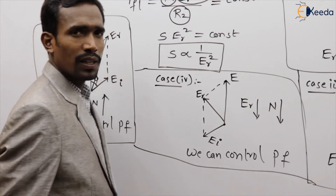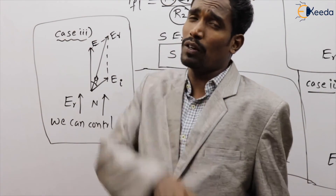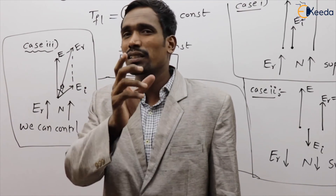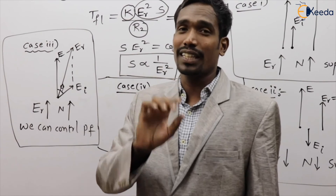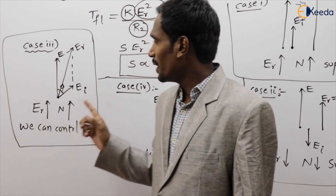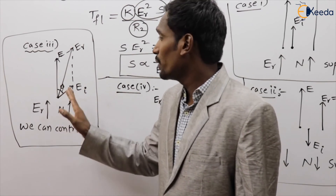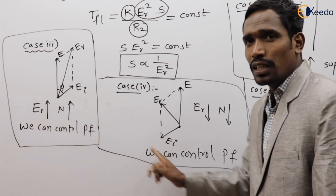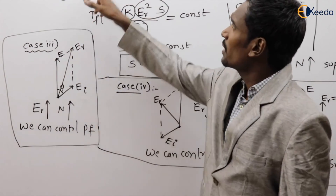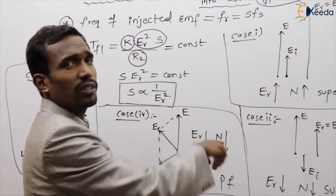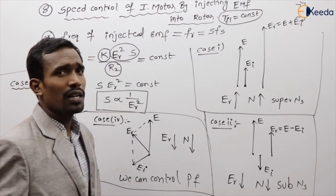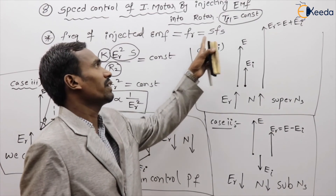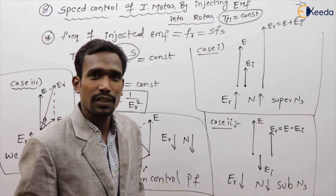Generally it is said that there is no possibility to control power factor in an induction machine, but this is not 100% correct. We can control the power factor only when EMF is injected with some angle — not in phase and not out of phase, but at an angle. In Cases 3 and 4, power factor control is possible. The key takeaway: the frequency of the injected EMF must equal the rotor frequency, which is slip times the stator frequency.